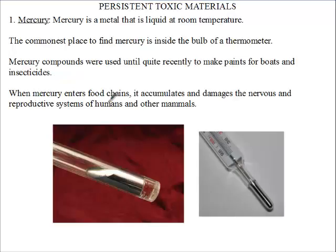Now when Mercury enters the food chains, instead of being broken down, since it is not degradable, it accumulates. And when it gets to a point, it damages the nervous and reproductive systems of humans and other mammals.